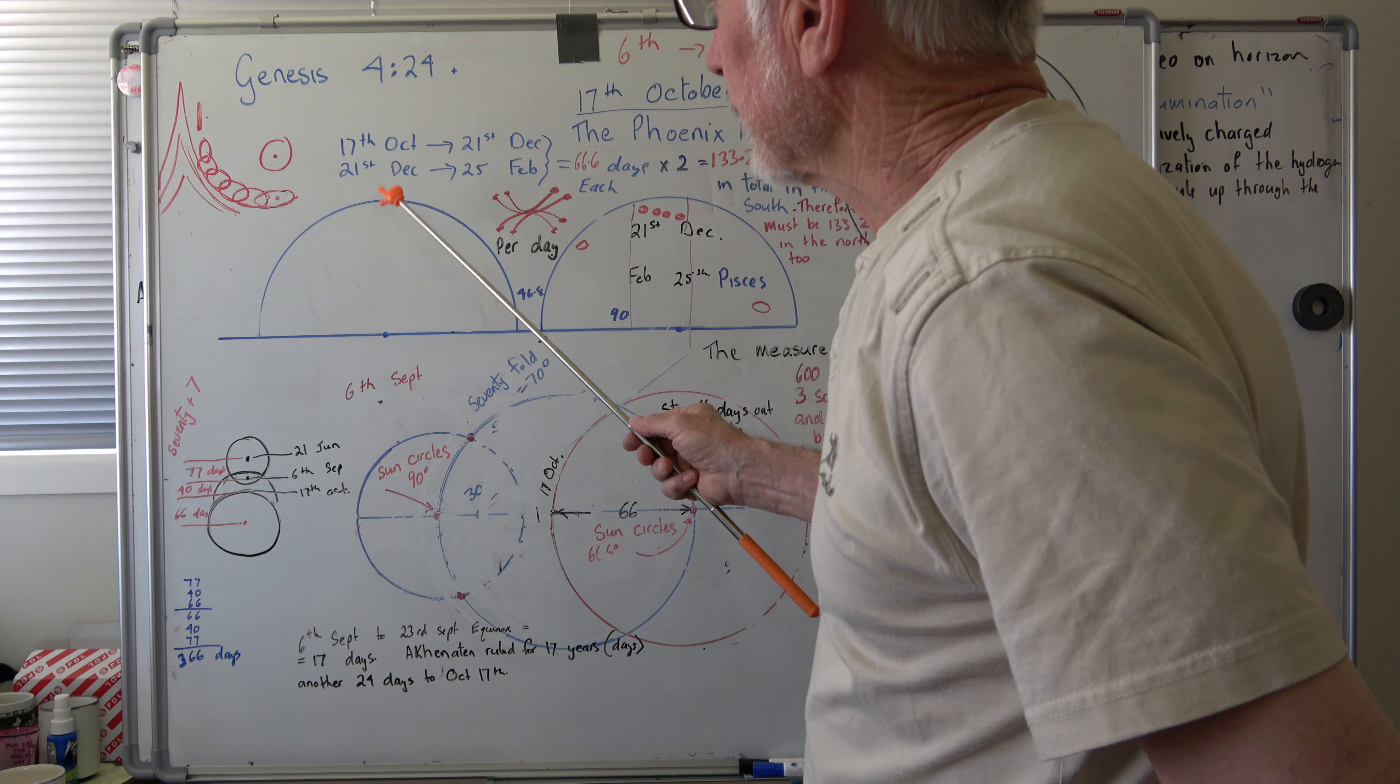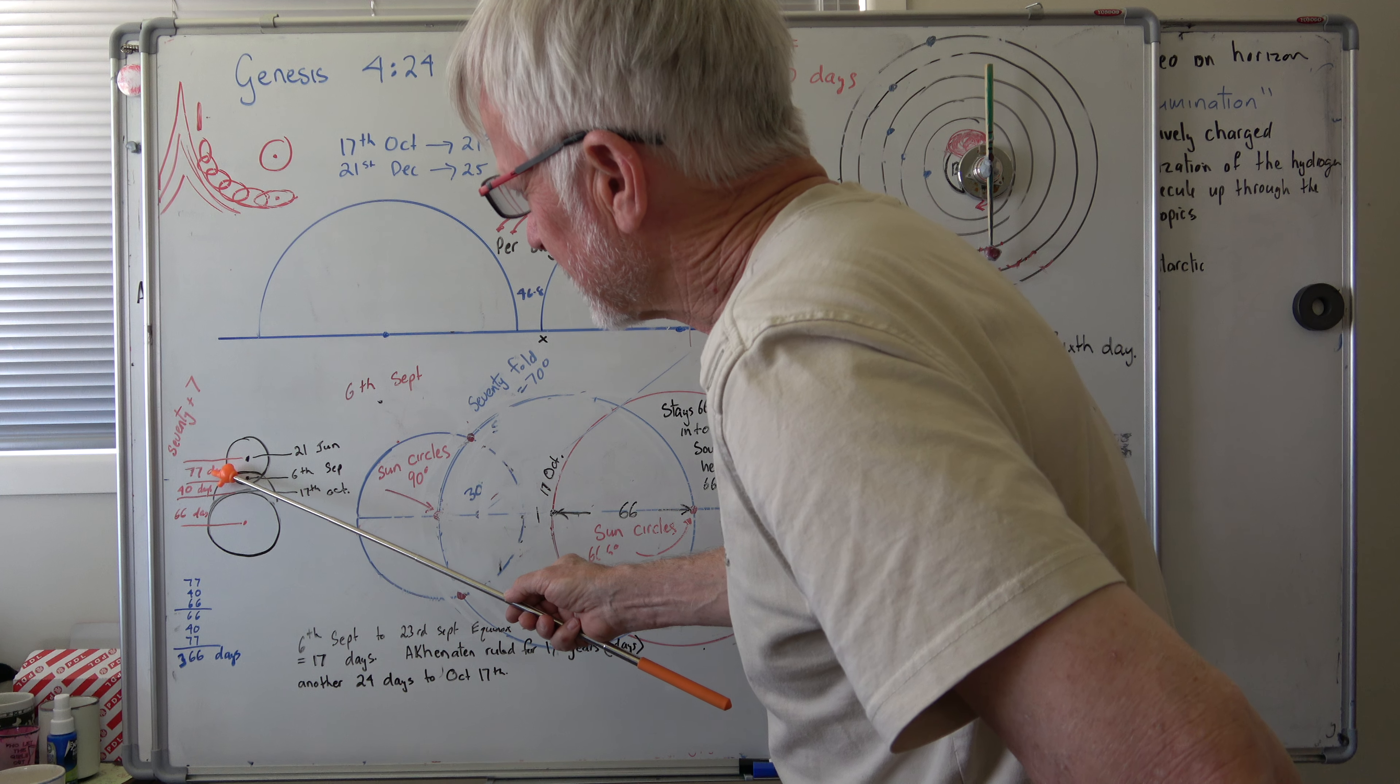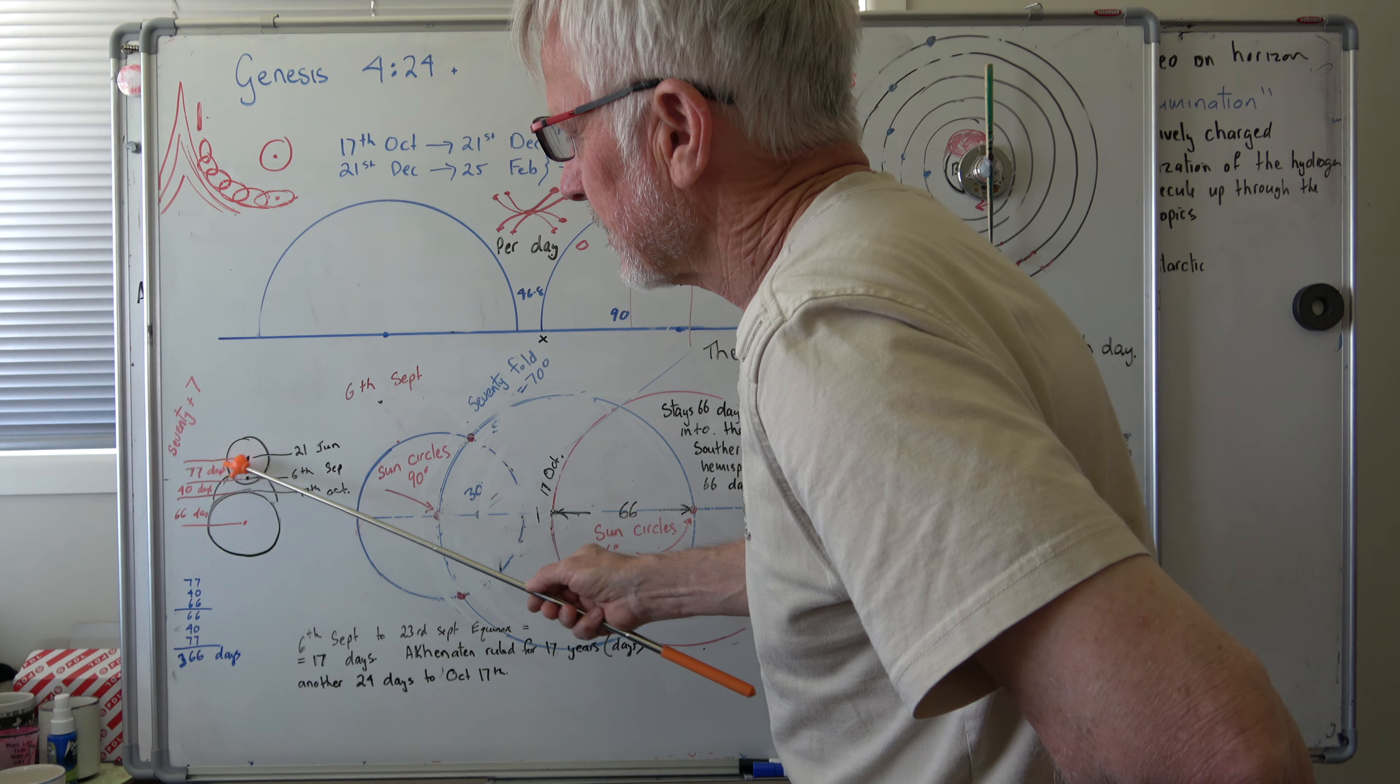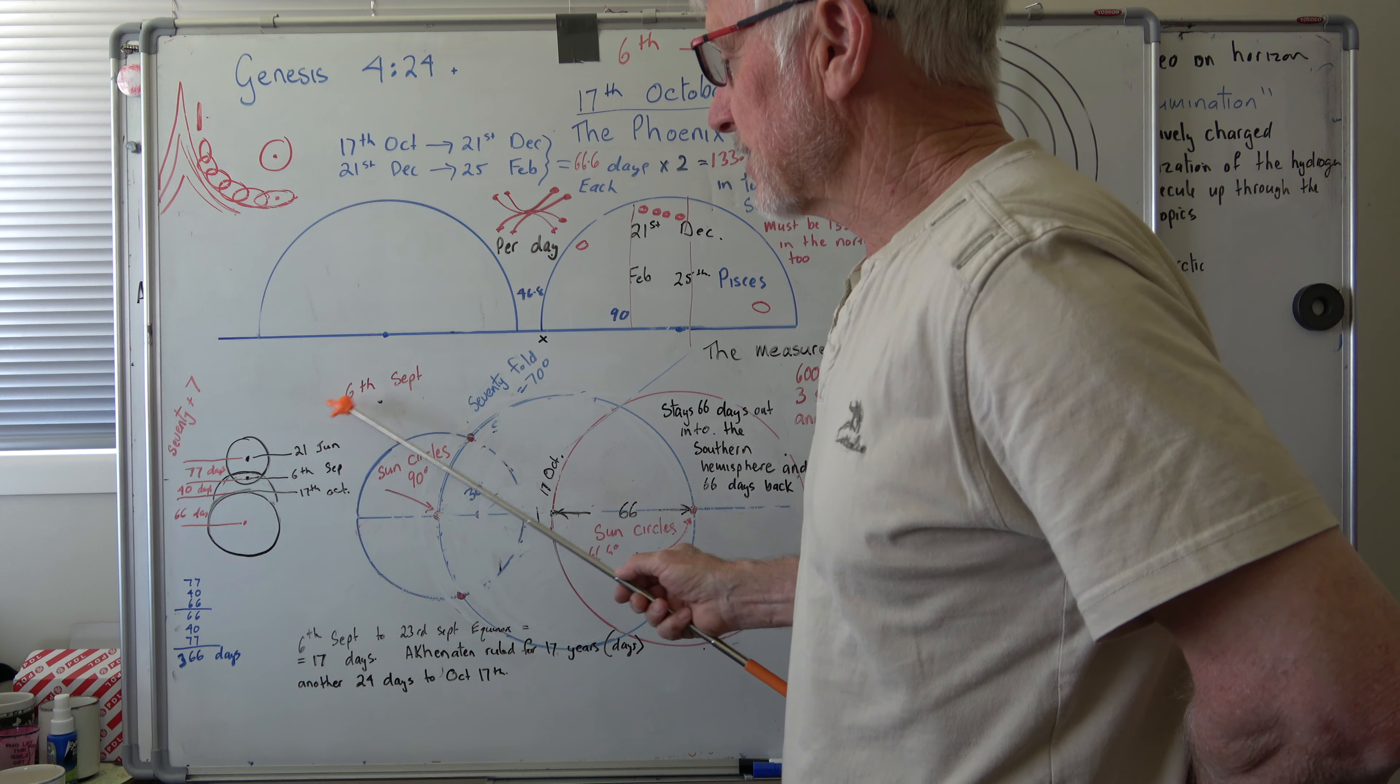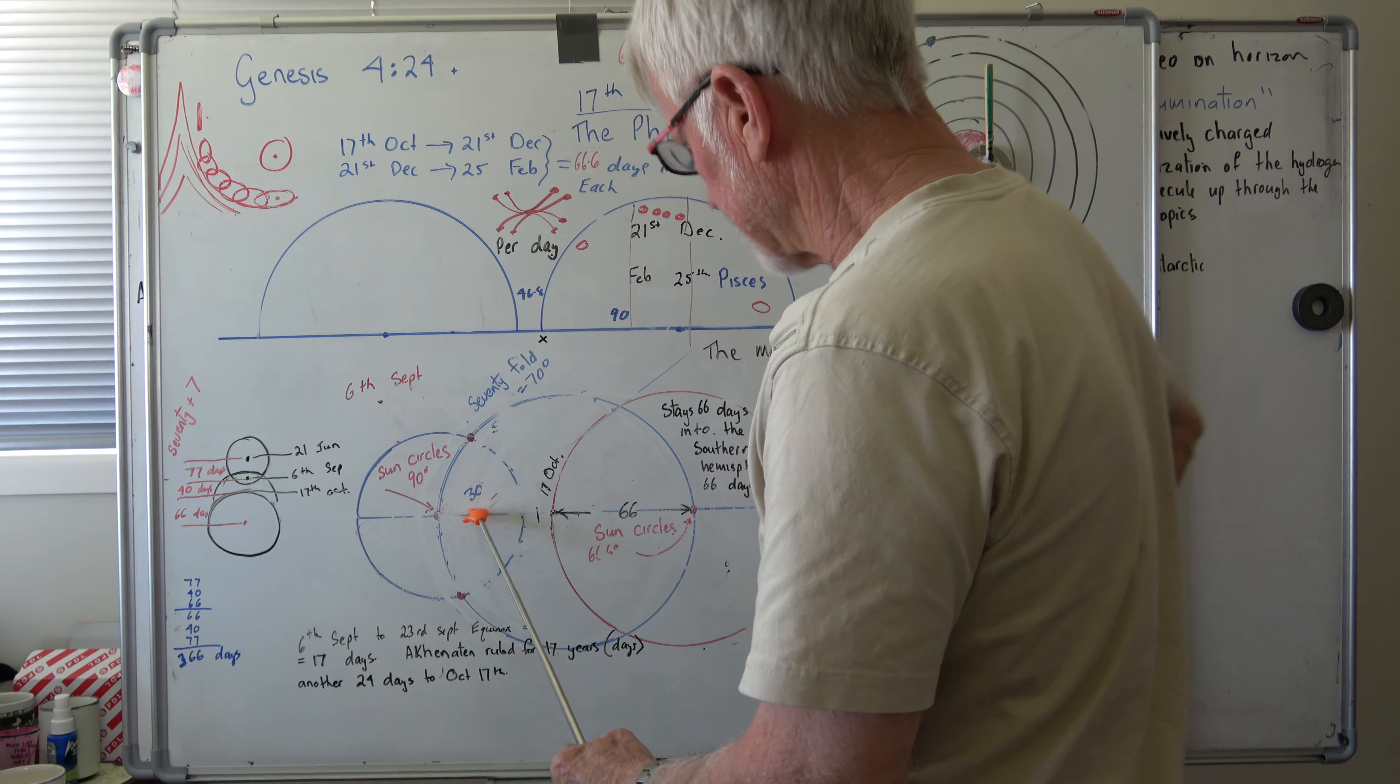Now in the story it's seventy and sevenfold. So you've got to understand when the overlay is right up here, it's 77 days. So you've got your seventy and your seven. From the 21st of June to the 6th of September—because this is what the whole divine story is all about. The sixth day of creation happens on the 6th of September.